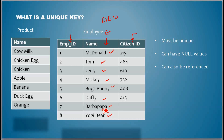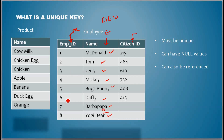As soon as an employee is hired, the employee ID number is assigned to them, so this forms a primary key. It has to be unique and it cannot allow any null value.